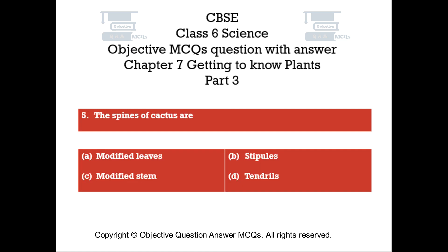Question number 5. The spines of cactus are. Option A: Modified leaves. Option B: Stipules. Option C: Modified stem. Option D: Tendrils.